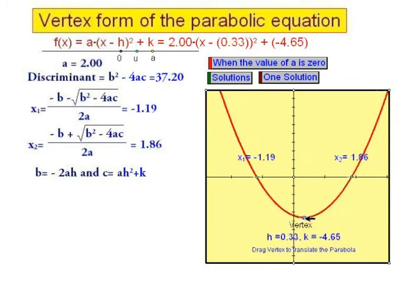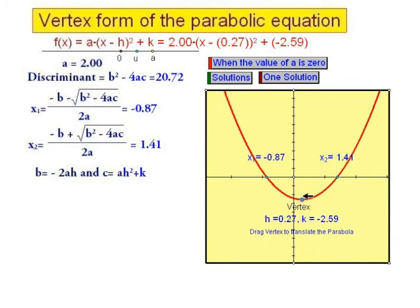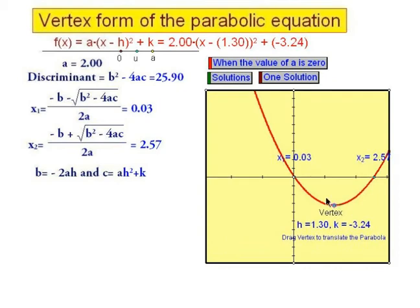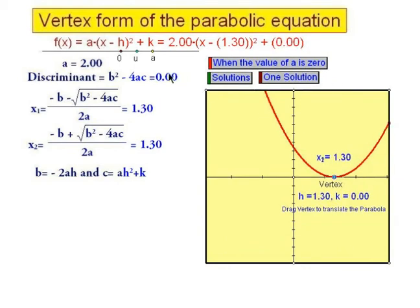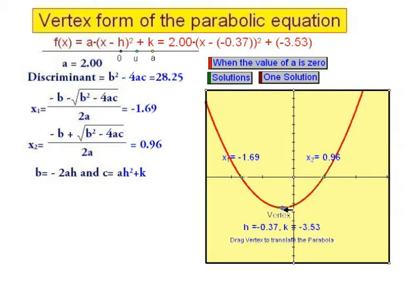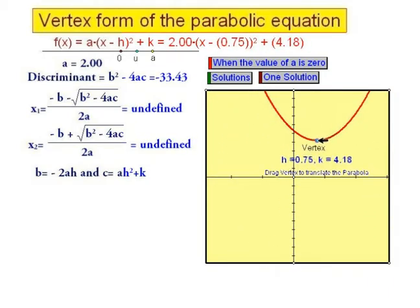Discriminant has positive value and it has two real solutions. And when the discriminant is zero, it has two identical values, whether you move it here or there.